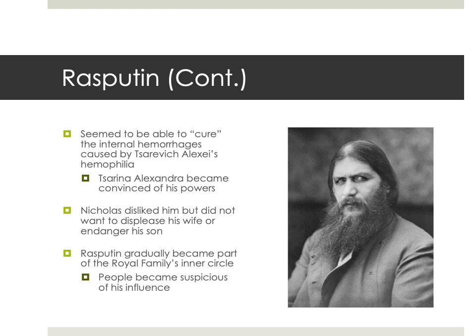They gave Rasputin a job as a lamplighter in the palace just so that he had a legitimate reason to be there. But he really worked his way into the inner circle of the Romanov family — he was even eating dinner with the Tsar, the Tsarina, and their daughters. This is a peasant from Siberia, basically a con man known for a very scandalous and disreputable personal life that even the Tsar knew about, eating dinner with the Russian royal family. People in Russia became increasingly suspicious of the influence he seemed to have over the royal family, particularly over the Tsarina, who with Nicholas away at the front was running domestic affairs.